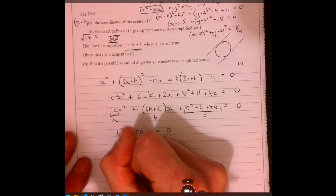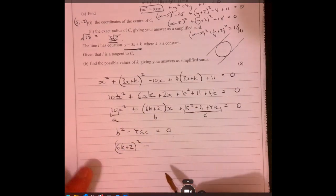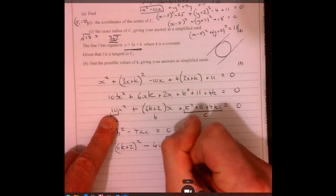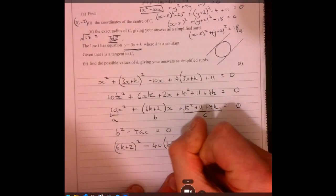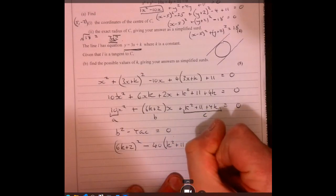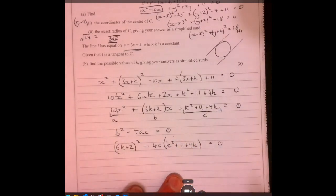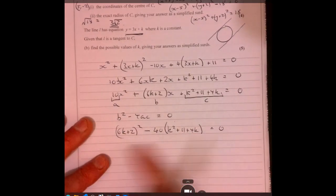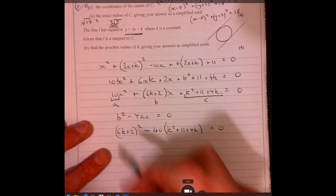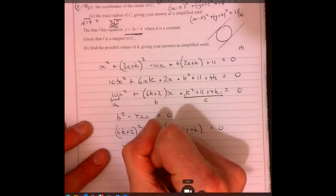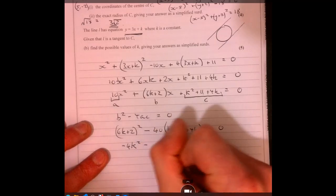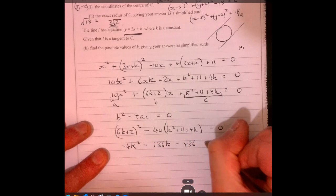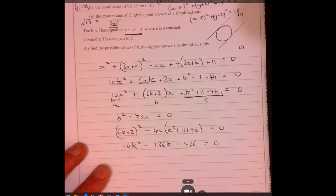So we've got that squared minus 4 times, so that's 40, times C. So K squared plus 11 plus 4K. We want to know when that's equal to 0. If we multiply this out, tidy it up a little bit. Again, I'm just going to miss a little stage here. That's going to give me 4K squared minus 136K minus 436 equals 0.